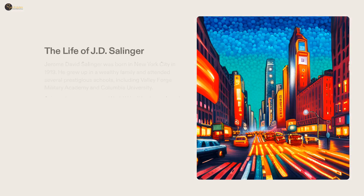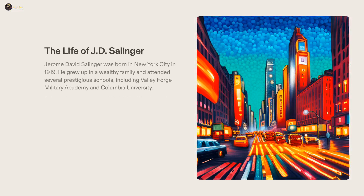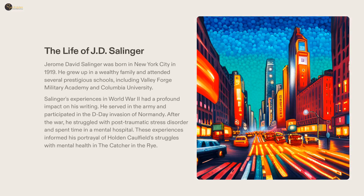J.D. Salinger, a widely known writer, was born in 1919 in New York City to a privileged background. He went to some of the most esteemed schools in the USA. Salinger's experiences during World War II, particularly the D-Day invasion of Normandy, profoundly impacted his writings. Later, he received treatment for post-traumatic stress disorder, which had an effect on his characterization of Holden Caulfield in The Catcher in the Rye.